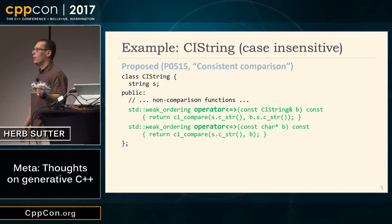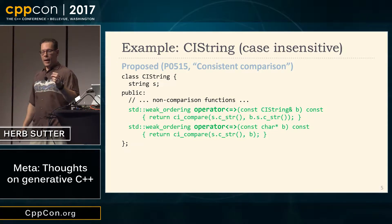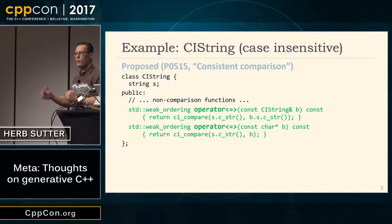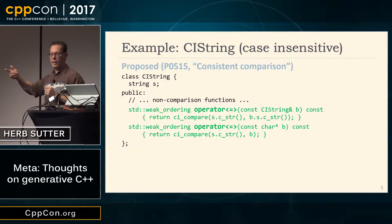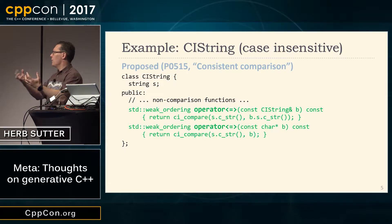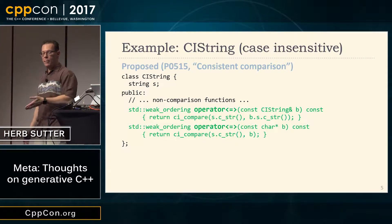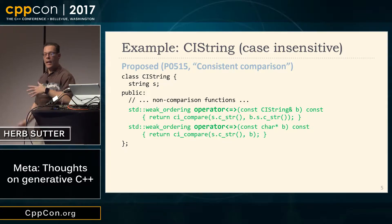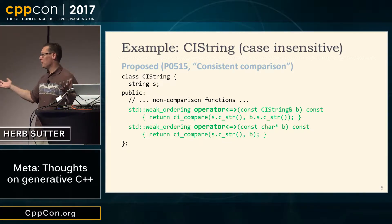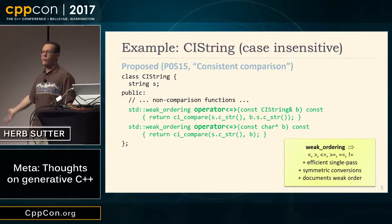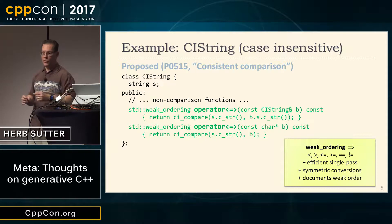The idea, if this proposal is accepted, is that instead of writing those 18 functions you write two. Notice they are members — they don't need to be non-member friends to get conversions and symmetry. You say you want to compare against another CI string, and by the way that returns a weak ordering. That means it's an ordering, so I generate all six comparison operators, not just equality and inequality. I have more information because it says what kind of ordering it is, which we do not have expressed in code today. There's another one because I also want to compare against C-style strings — that could be even better as a string_view. It also returns a weak ordering, so all I say is weak ordering and that generates the effect of 12 functions.